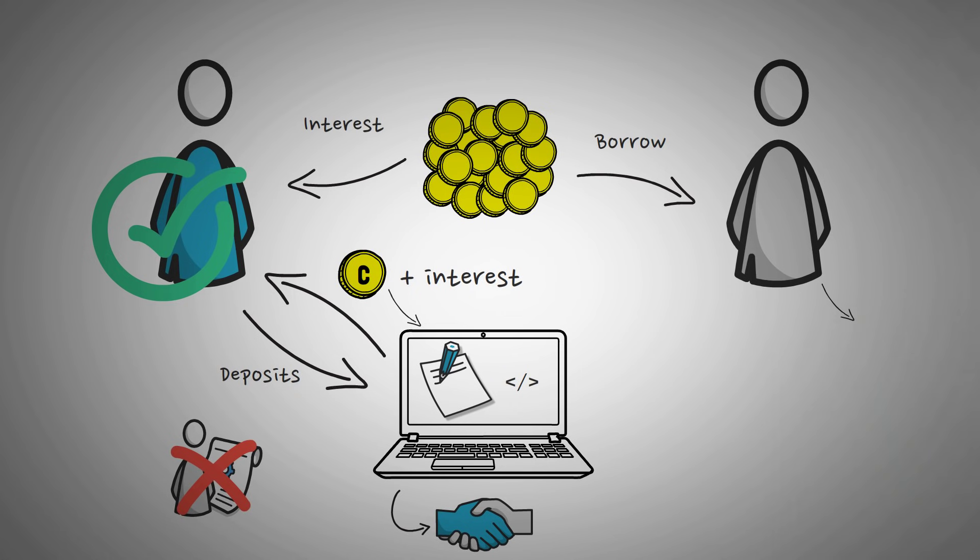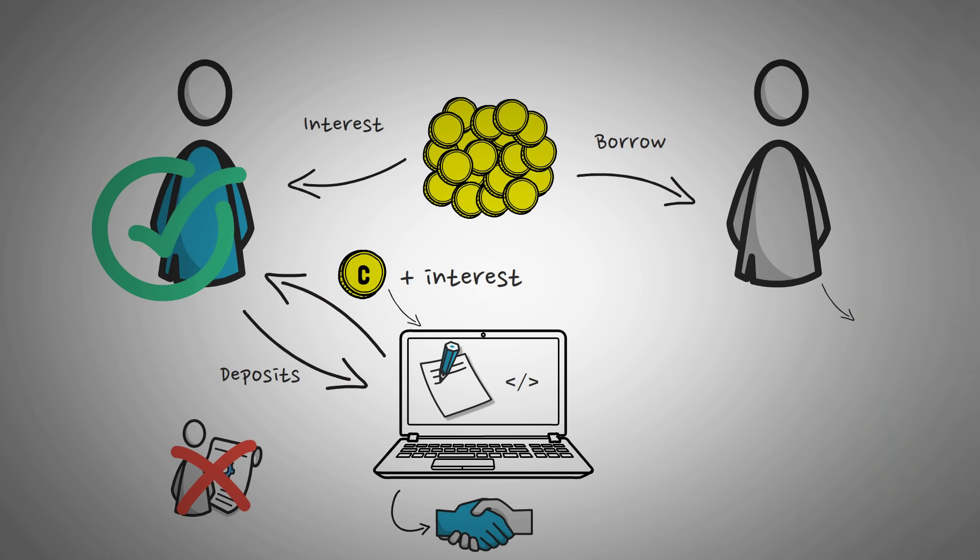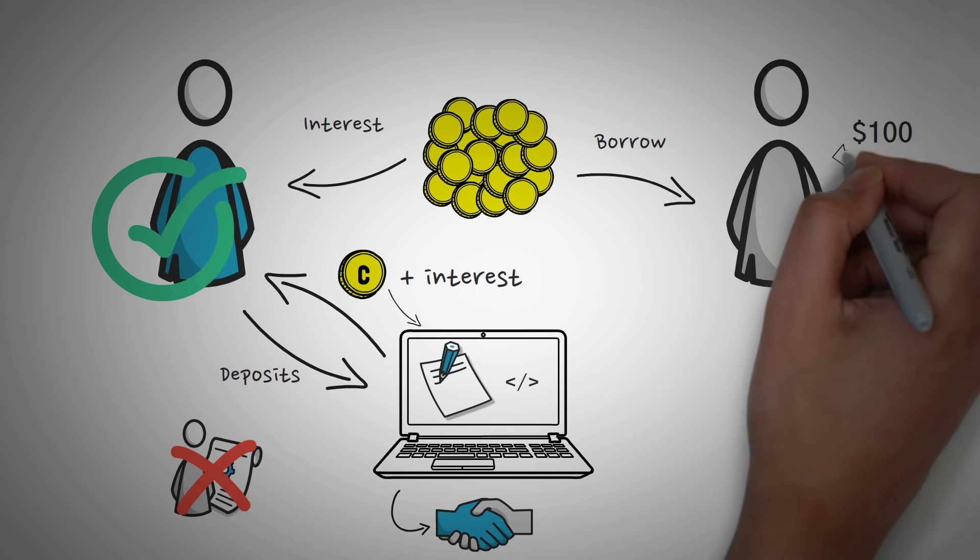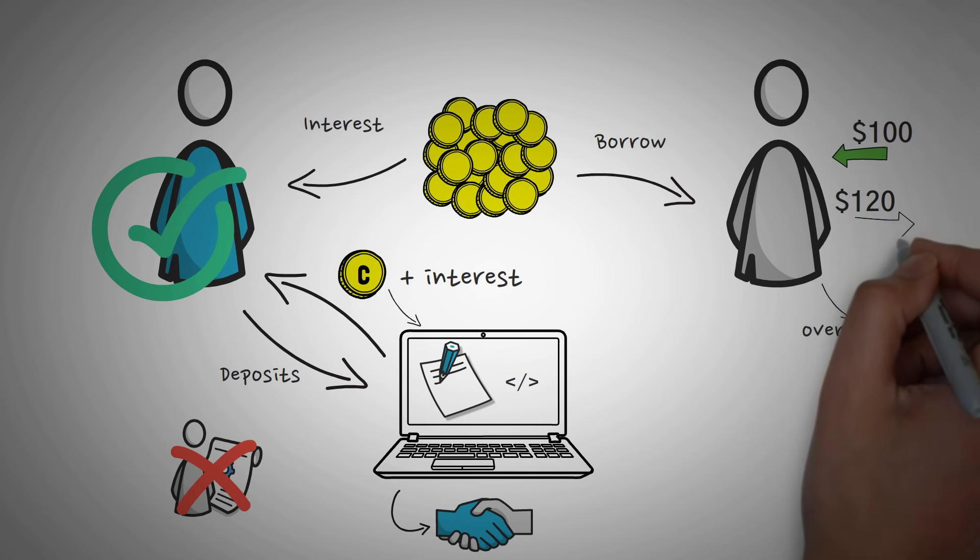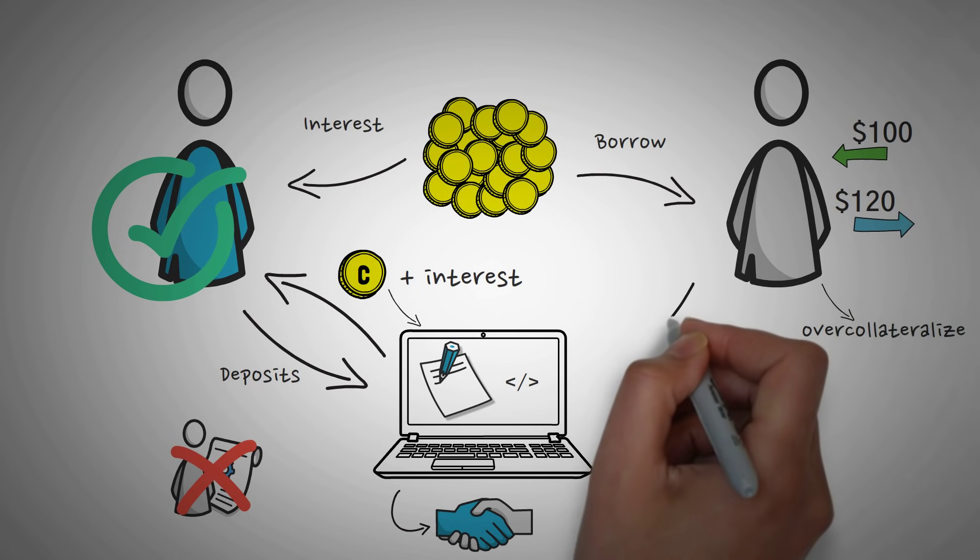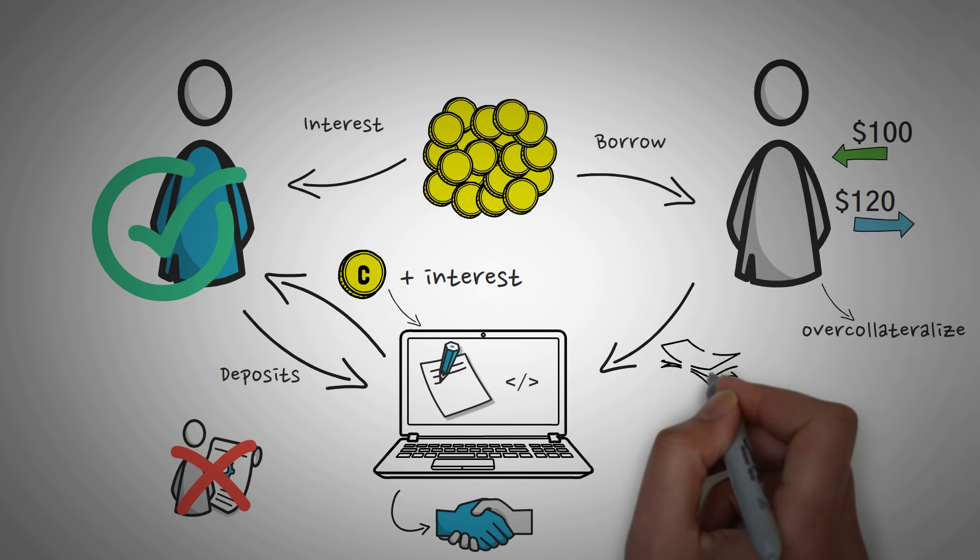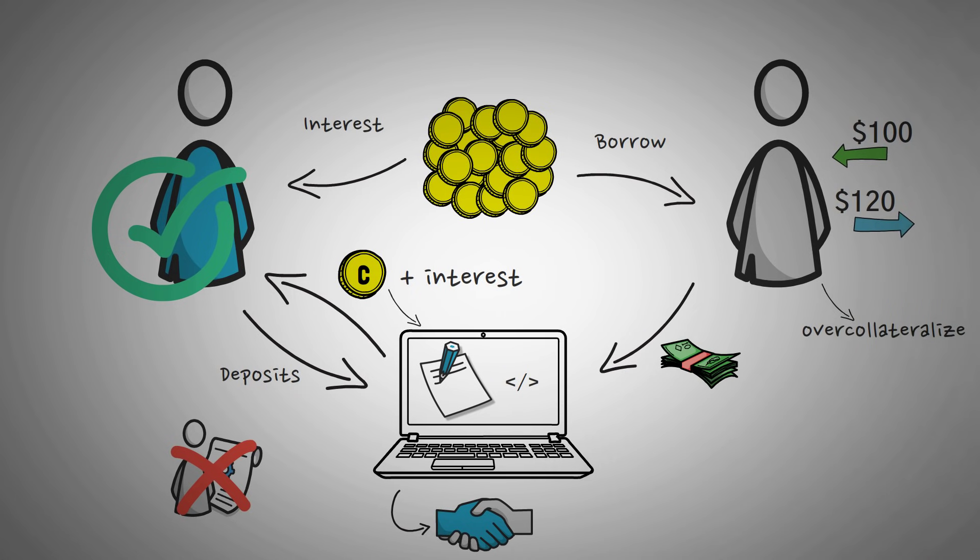In the borrowing portion, person B must do something called over collateralize his loan. This means if he wants to borrow $100, he must put up $120. So that way, if he runs away and never pays back his loan, the smart contract is written in a way that it can pay back person A their coins plus interest. Now at this point in time, you might be asking, what's the point of taking a loan if you already have the money?